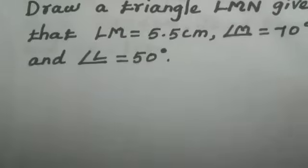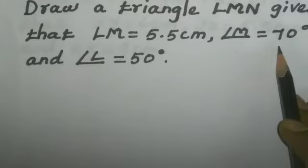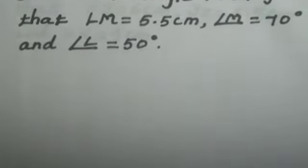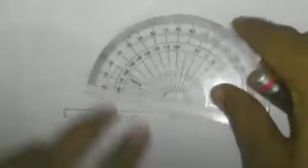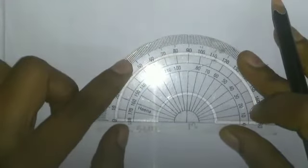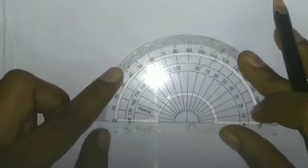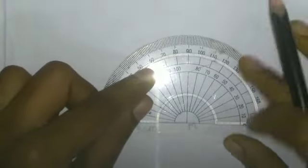Then, angle M equal to 70 degree. Take a protractor. So, the protractor at point M will be taken.